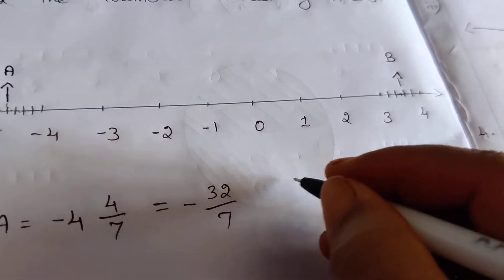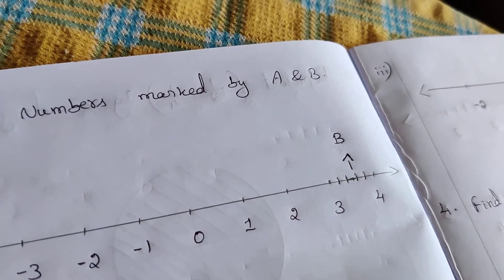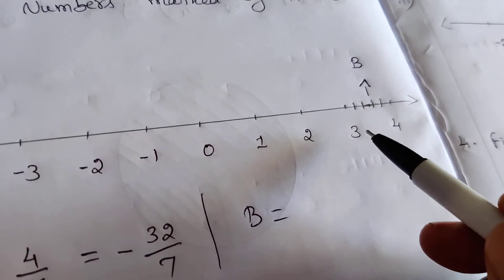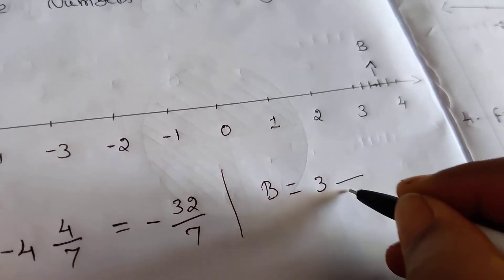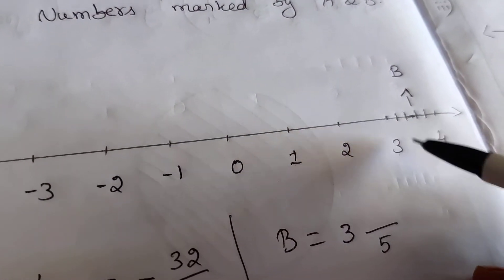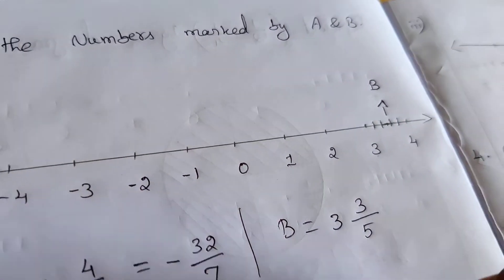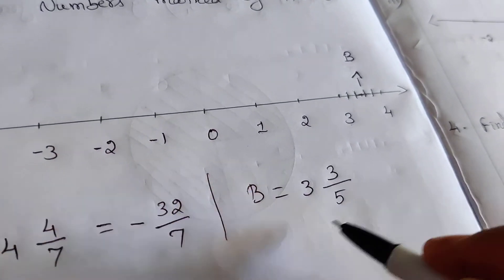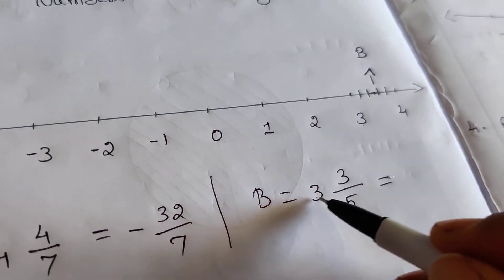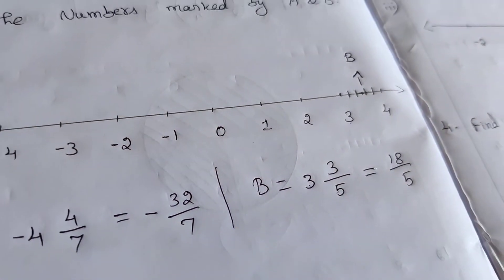Let's look at B. Counting: 1, 2, 3, 4, 5 — 5 equal parts and 3 equal parts. We can see 3 in the third line, so we can see 3 in the numerator. This is an improper fraction. We can multiply: 3 times 5 is 15, and 15 plus 3 is 18. So it is 18 by 5. B value is 18 by 5.